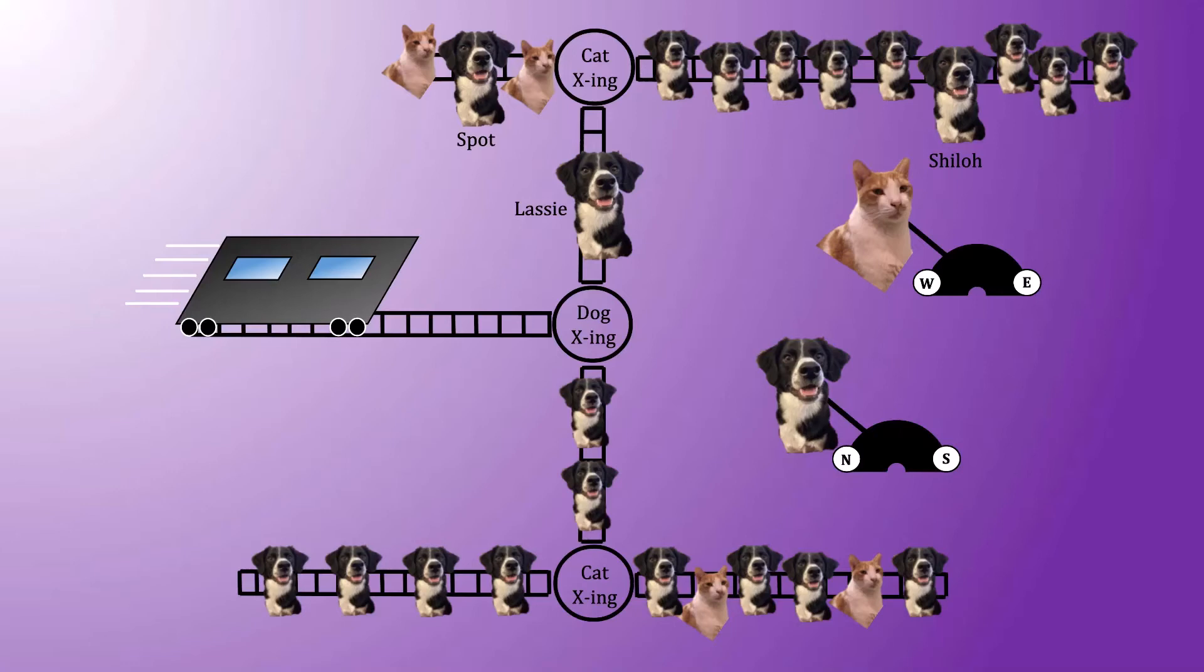This is a trick question. Regardless of which of the dogs is removed, the exact same number of dogs are expected to be struck. How could that possibly be?